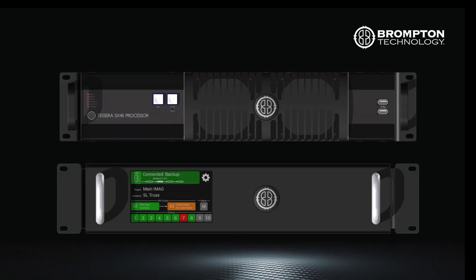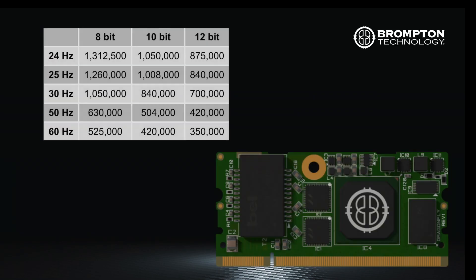Each processor has different capabilities but ultimately all run the Tessera software. For these videos I am using an SX40 with an XD distribution unit. All panels that are connected to the processor must be fitted with an R2 receiver card, and the capacity of each port can be found in the port calculator which is in the description for this video.